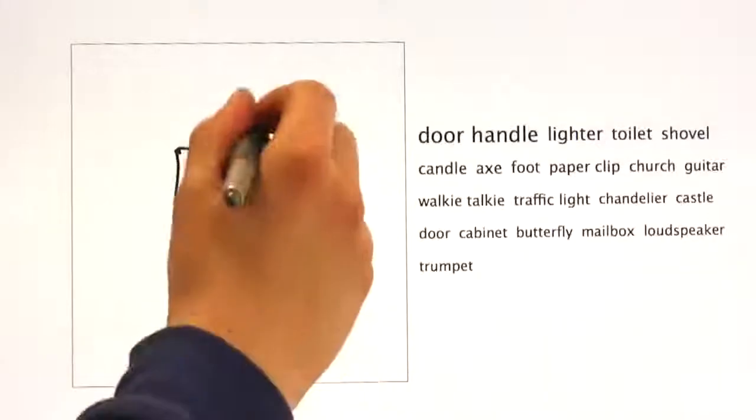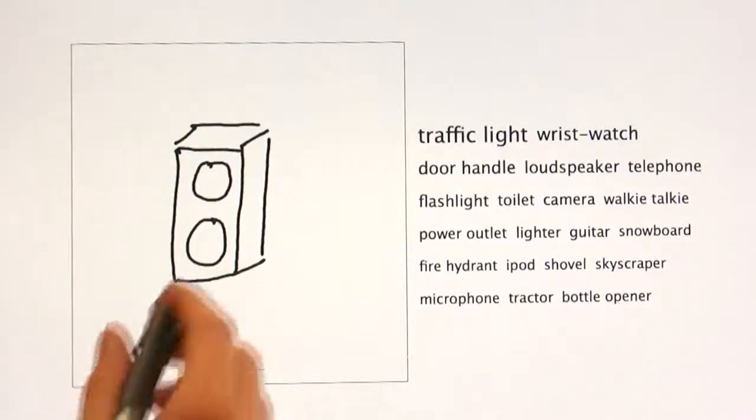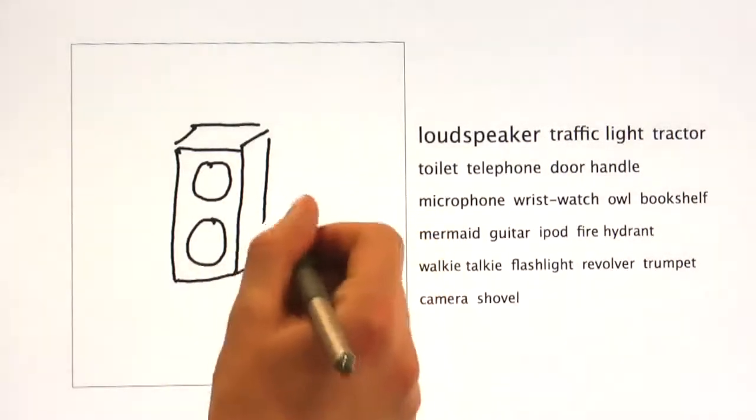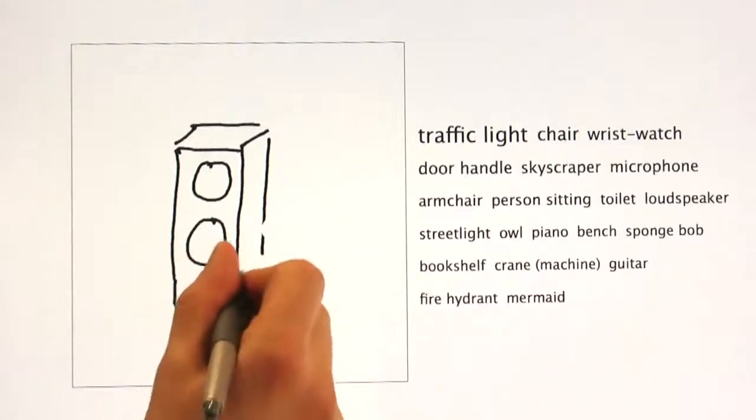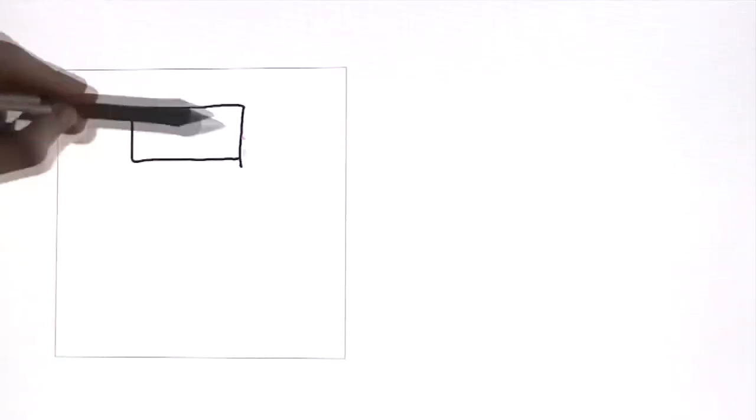In many cases, the rough overall shape of two different objects are quite similar, and only by adding or removing small details can we clearly communicate the desired category. Here, we show several more examples of this.